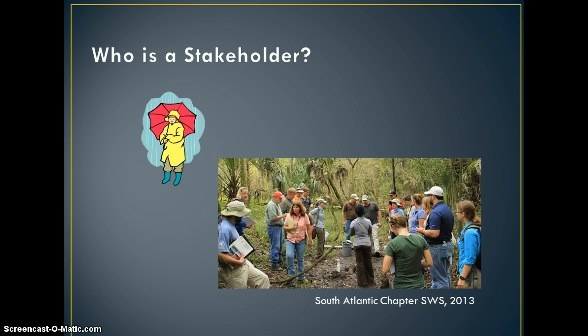The pool of stakeholders may be diverse or limited, depending on the specifics of the environmental management project. For example, a stakeholder may include anyone willing to stand around discussing your management problems in bad weather. Stakeholders can consist of entities at any scale — for example, individuals, organizations, or constituencies such as the public.